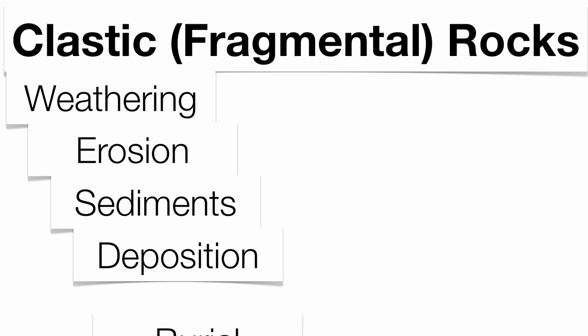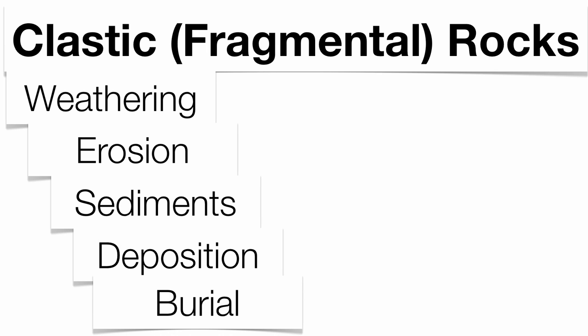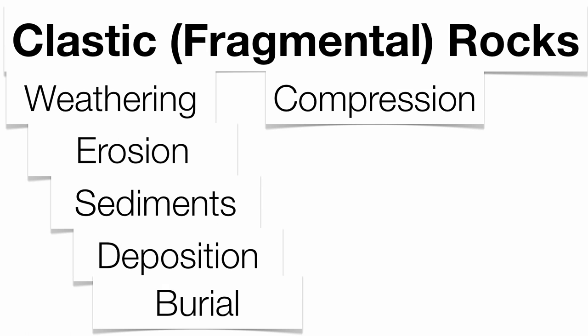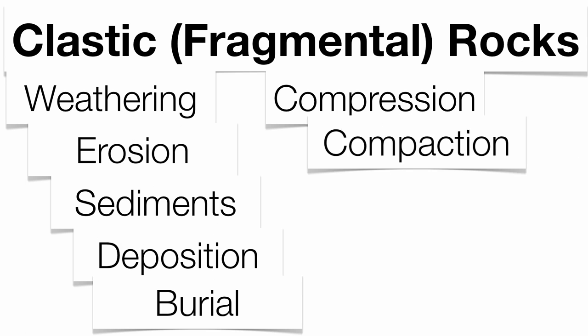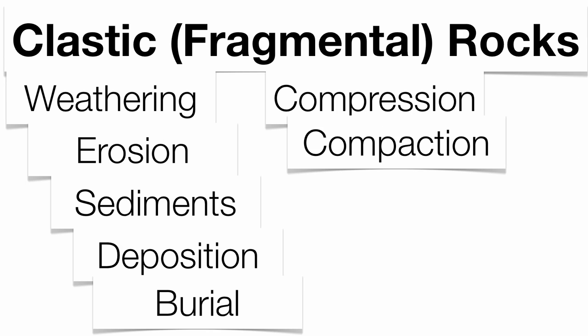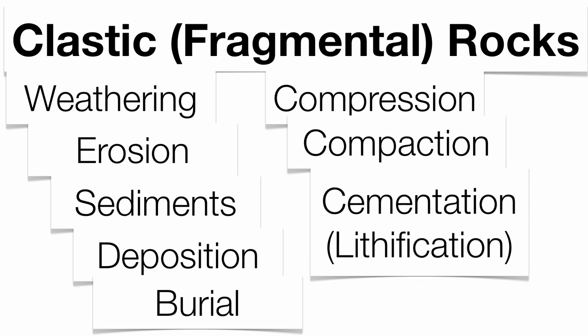Once sediments get deposited, they tend to get buried. The more layers of sediment you get, the greater the pressure underneath the surface. That pressure, called compression, is going to cause compaction of the sediments, which means those sediments get nice and close together. Once they get close together, they're going to get glued through a natural cement — another term we use is lithification. So clastic processes are extremely complex in regards to what a rock has to go through to become a clastic sedimentary rock.